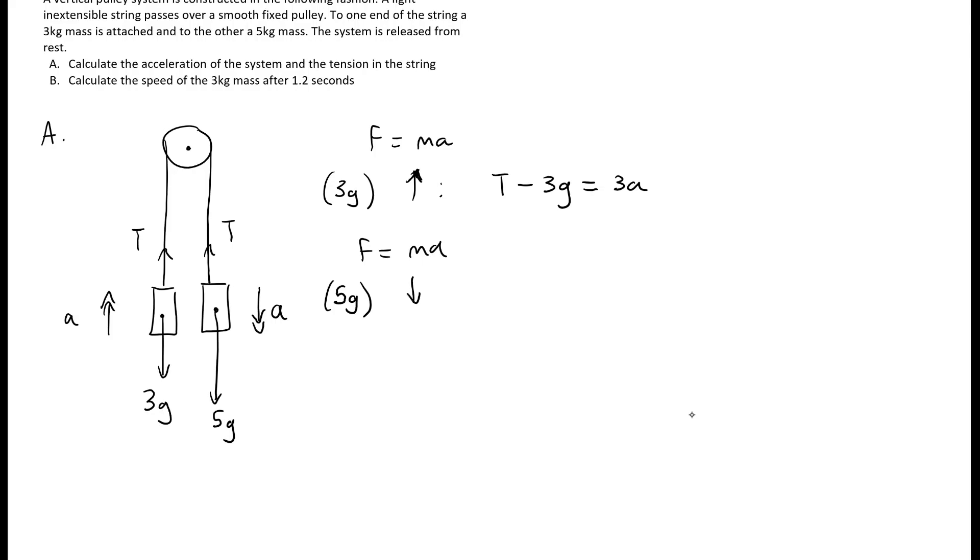we'll take down to be positive here because it's accelerating down. And so we'd have 5g minus T here because T is acting up in opposition to down, our positive direction, equals 5a, the mass times acceleration.